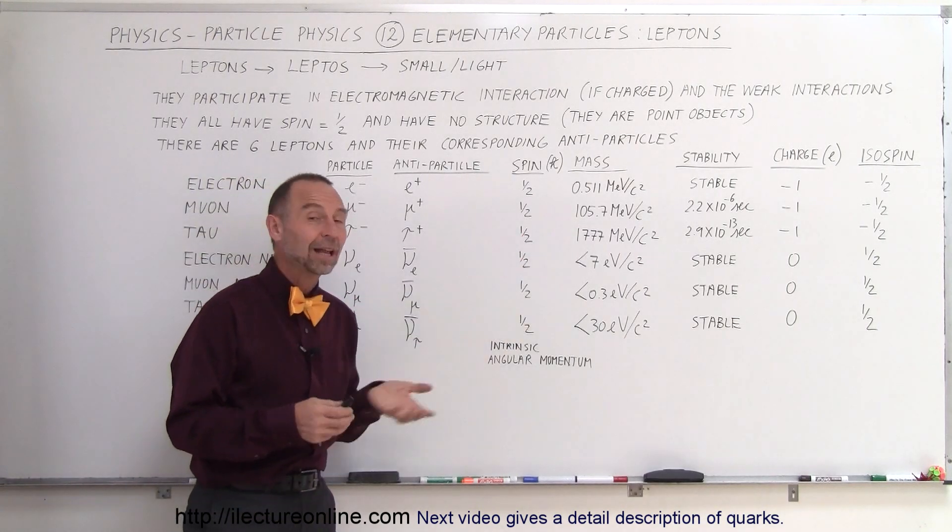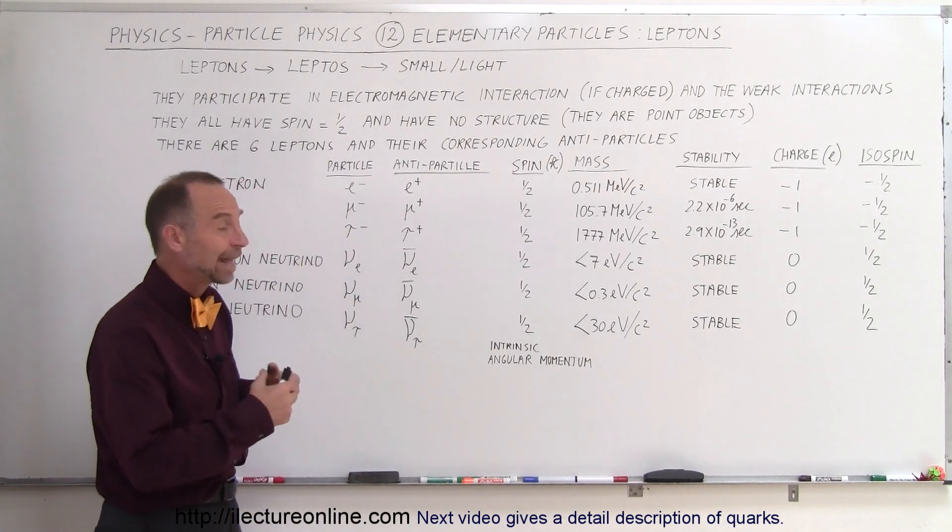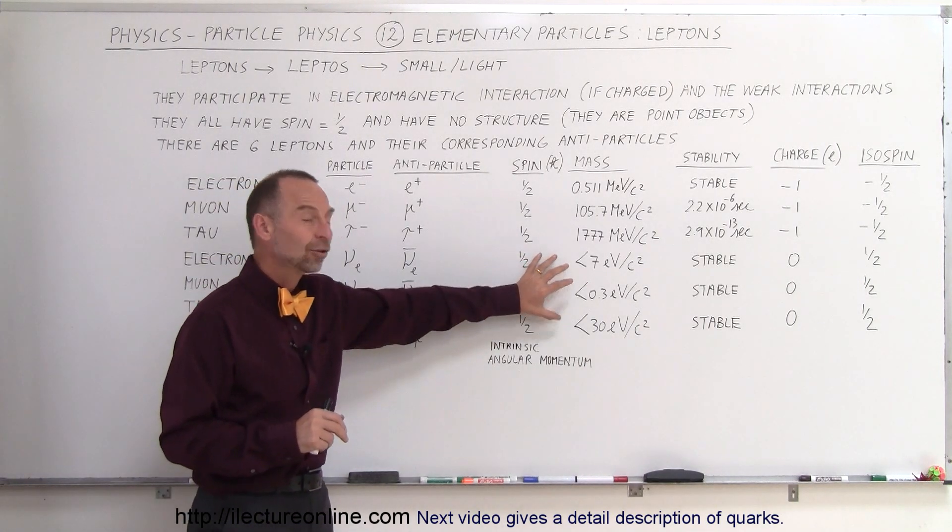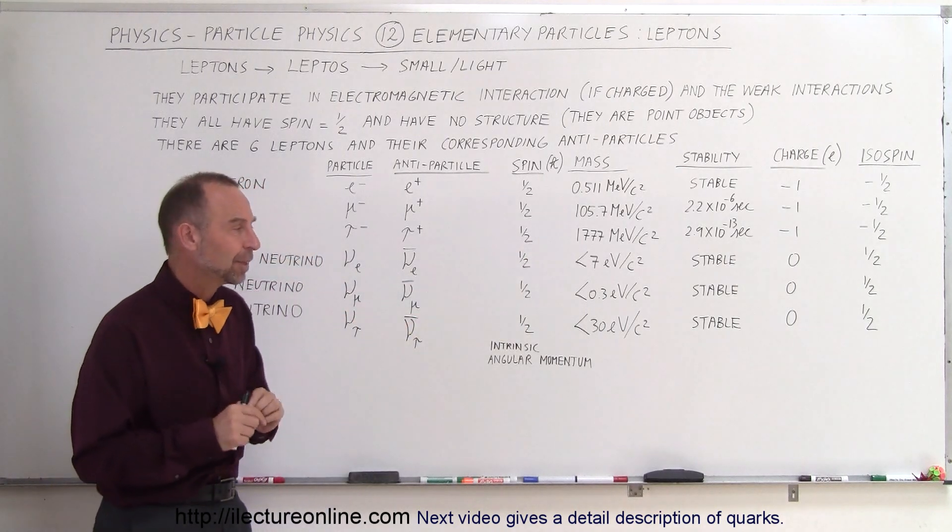They used to think that these particles were like photons and therefore had no mass at all. But now we know that's not the case. They have a small amount of mass so therefore they don't move quite at the speed of light.